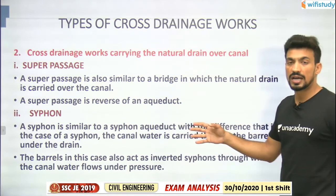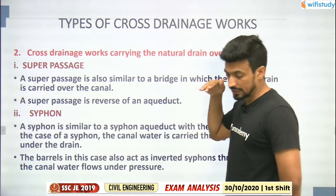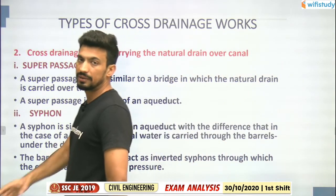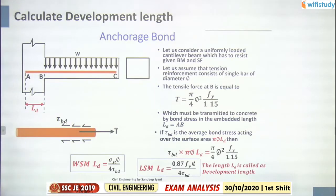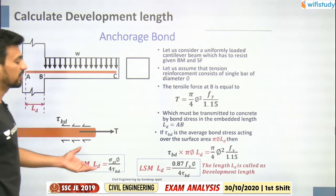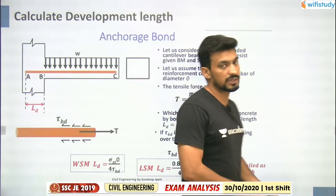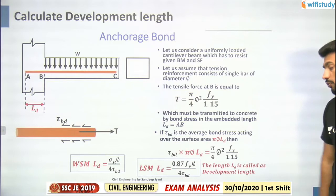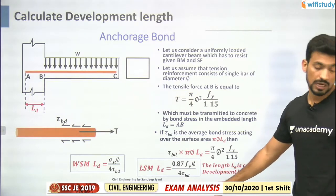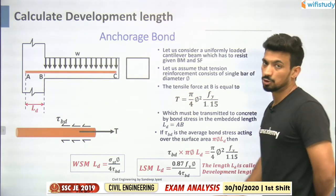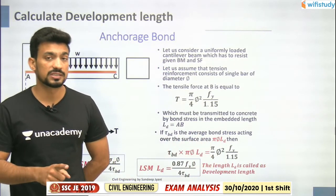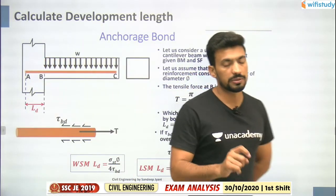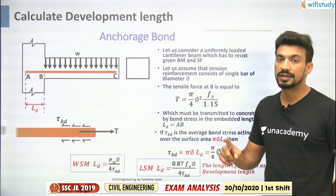In a siphon, canal water passes below the natural drain through barrels or pipes under pressure. In level crossing, they are at equal levels. Development length question appeared: formula is 0.87 × fy × φ / (4 × τ_bd). Bond strength values for different grades of concrete may be asked in the next shift.